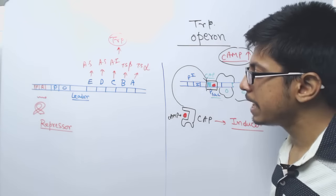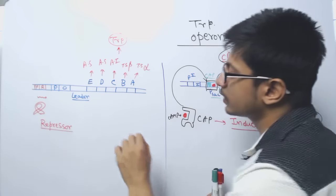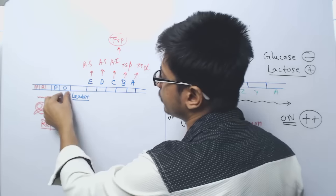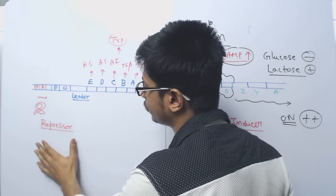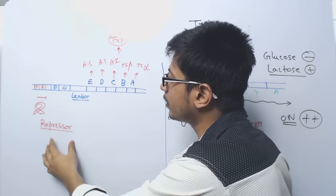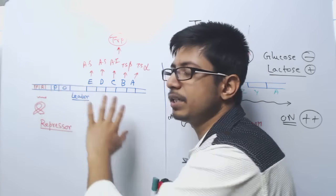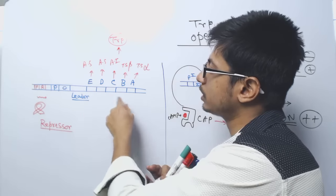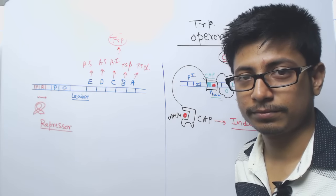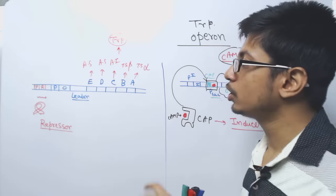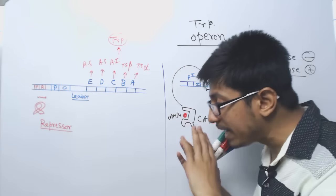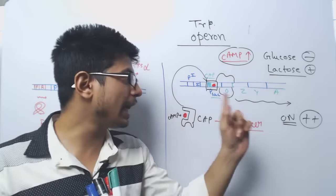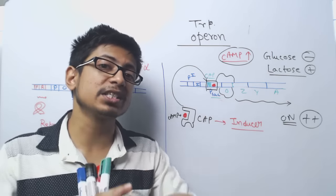An aporepressor means that once produced, the repressor does not have the capability to interact with the operator site. So though the repressor is present inside the cell, it will not be able to bind with the operator — the operator region remains free. RNA polymerase can easily interact with the promoter and transcribe all the structural genes. By default the tryptophan operon is turned on, unlike the lac operon which is turned off by default.